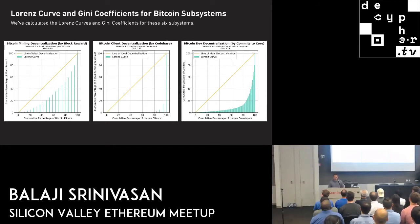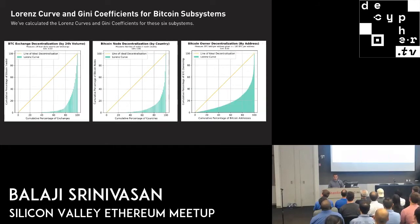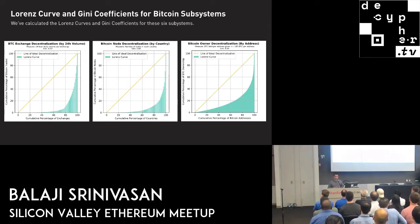We can also do this for exchanges, nodes, and owners. Across exchanges, what is the distribution of 24-hour daily volume? Across countries, how many nodes are in the US, China, and elsewhere? Across owners, how much is held per address, given that we impose some threshold — that's important, because most people in the world have zero BTC or zero Ethereum. Unless you impose a threshold, this will trivially be 0.99 Gini. Given a threshold, what does owner decentralization look like?